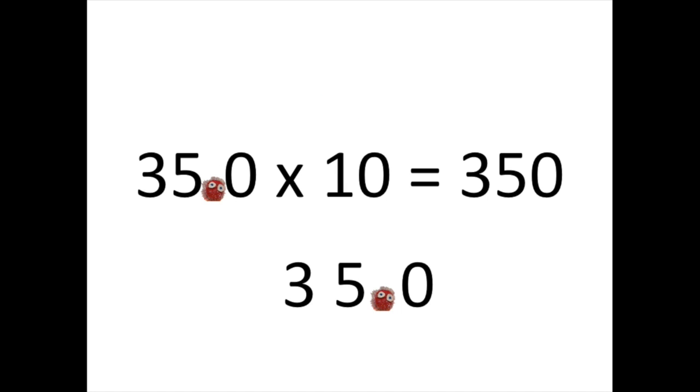If I multiply 35 by 10, then I can hop and change the value of 35. First, I count how many zeros there are in the power of 10 number, and I hop that many times. Because there is only one zero in 10, I hop once.